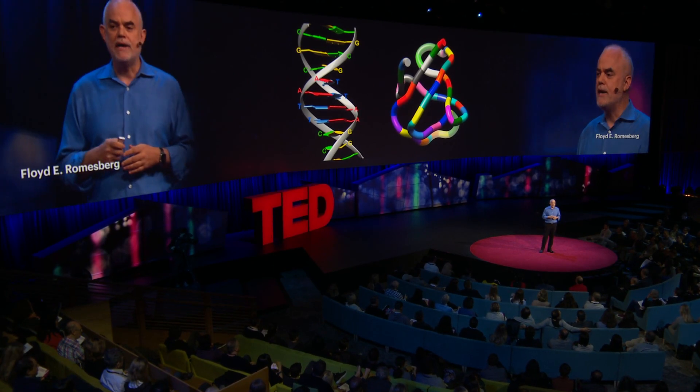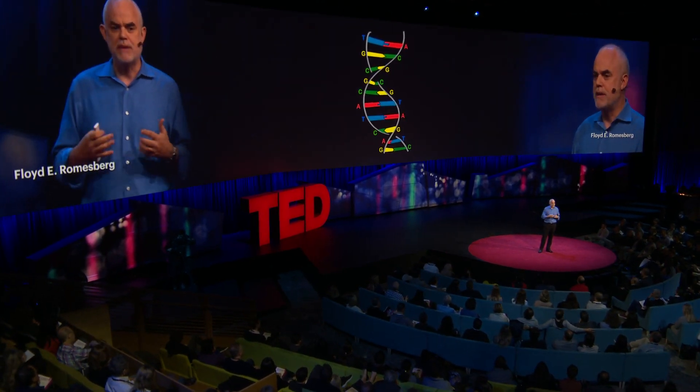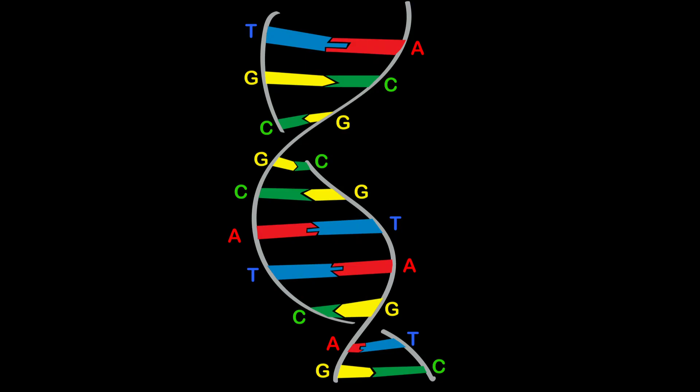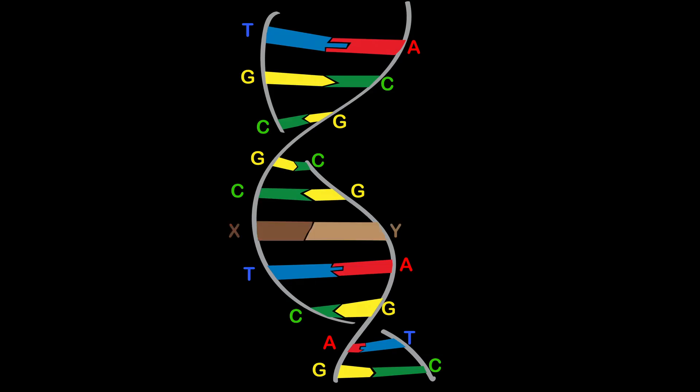All you have to remember from your high school biology is that the four natural letters pair together to form two base pairs — G pairs with C and A pairs with T. So to create our new letters, we synthesized hundreds of new candidates, new candidate letters, and examined their abilities to selectively pair with each other. After about 15 years of work, we found two that paired together really well, at least in a test tube. They have complicated names, but let's just call them X and Y.